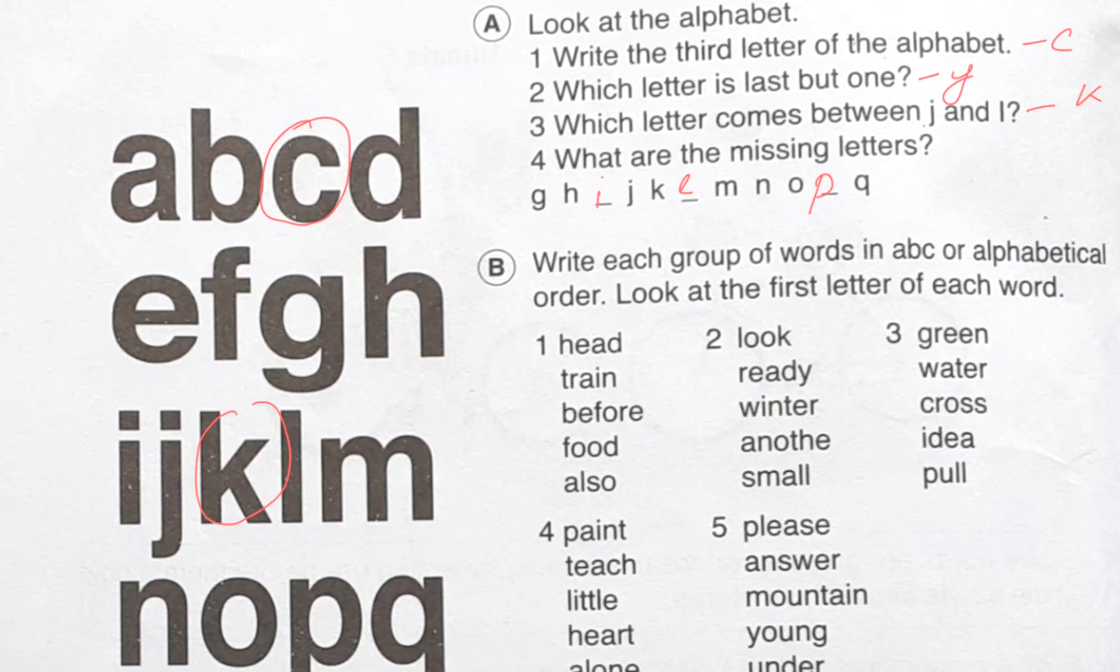Let's do B number exercise. Here it is written: write each group of words in ABC or alphabetical order. Look at the first letter of each word. So easy. Let's do here.